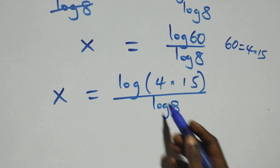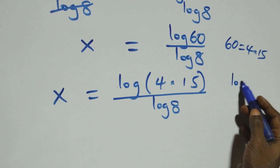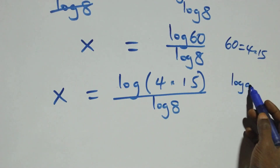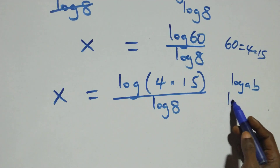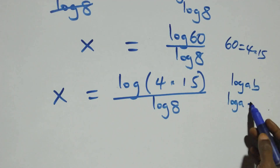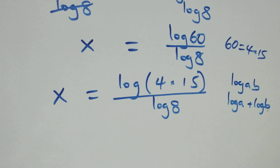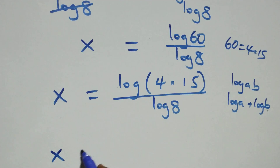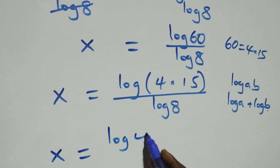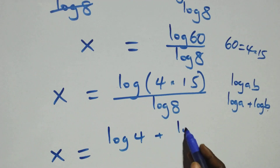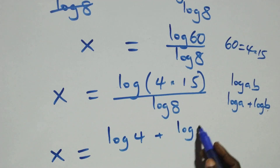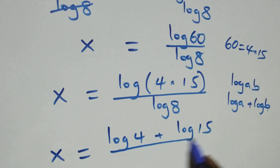The next step here, this follows when we have log of a times b, which we can write as log a plus log b. That is, all we have here becomes x equals to log four plus log fifteen, over log eight.